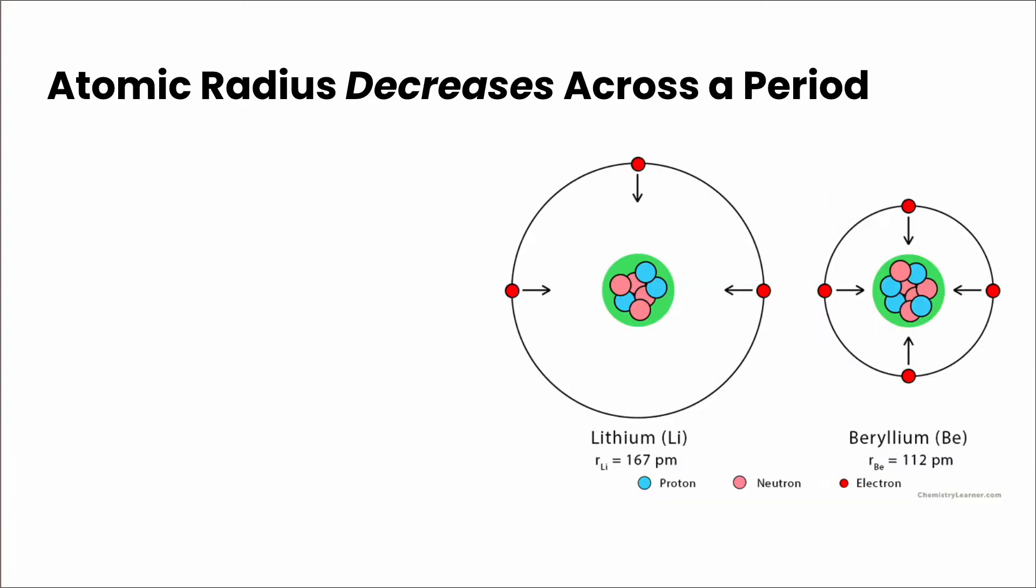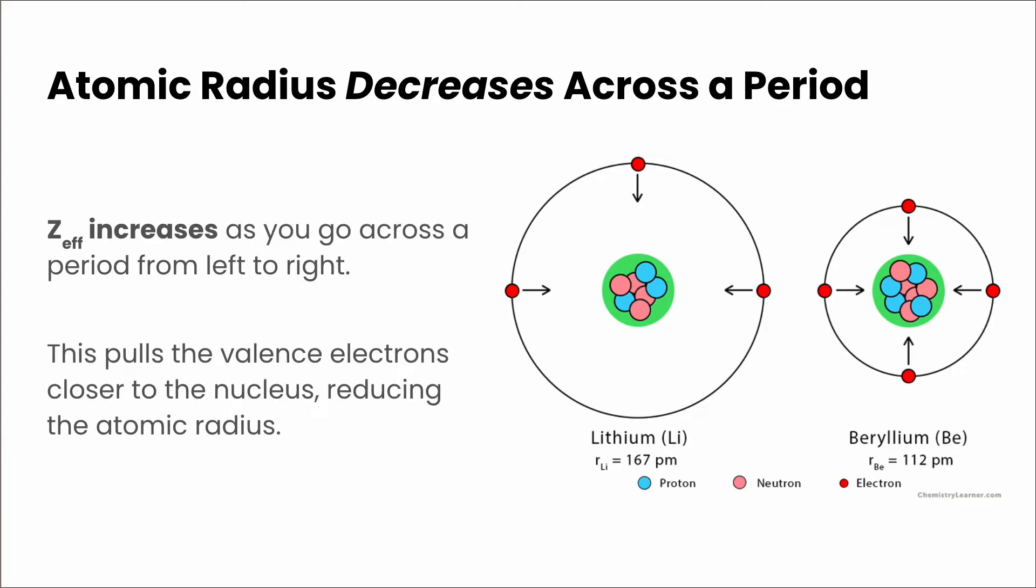Now if we take a look at atomic radius going across a period from left to right, it decreases. And this is because the effective nuclear charge increases as we go across a period from left to right. And that's going to pull the valence electrons closer to the nucleus, which reduces the atomic radius.